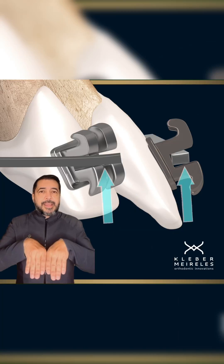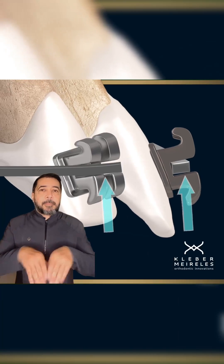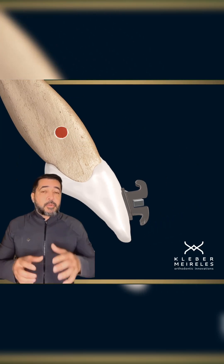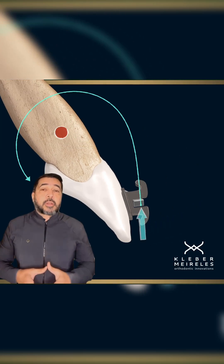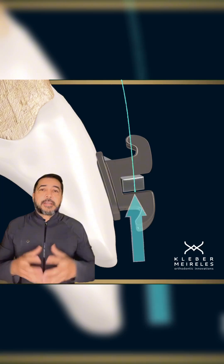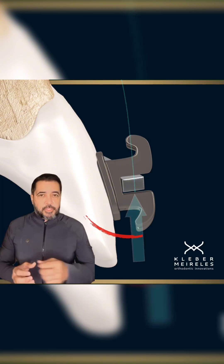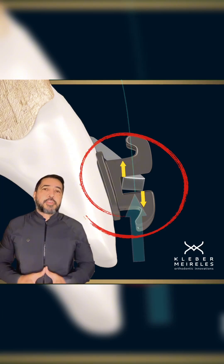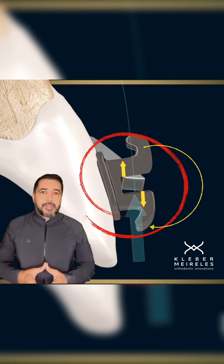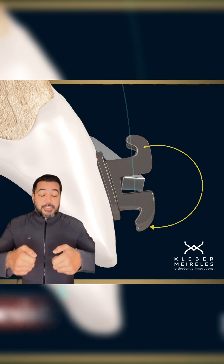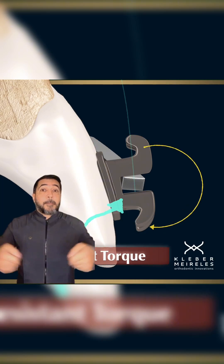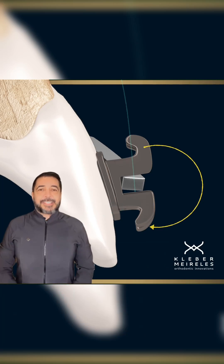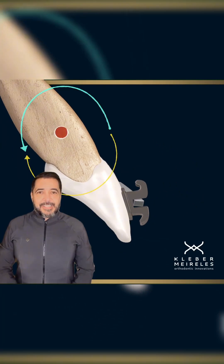In this case, you need to control the anterior inclination by means of torque. When you control the torque, you will end up with a better inclination of anterior teeth, and this is going to make all the difference during the smile. So we must understand how to manage the torque and when to apply this in our practice.